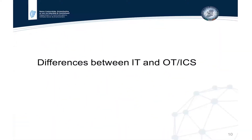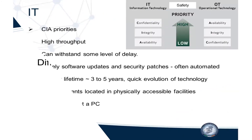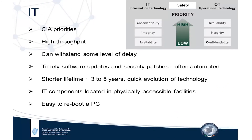There are important differences between IT and OT networks. In an IT network, the priority order is confidentiality, integrity, and availability. There's a lot of personal data at risk, high data throughput, and though availability matters, some delay is tolerable. Software updates and security patches are timely and often automated. There's a shorter hardware lifetime of three to five years, with quick technology evolution and components located in physically accessible facilities like data centers and offices.